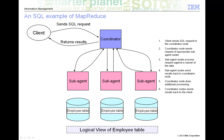Since for this request there are no inter-data dependencies, each sub-agent is able to process the request against its portion of the table in parallel with all the other sub-agents. Each sub-agent reads through its portion of the employee table and extracts the job classification for each employee, then sorts the results in job classification sequence, and reads through the sorted results counting the number of records for each job classification. Finally, each sub-agent sends back to the coordinator node a single record for each job classification with its value and number of occurrences.